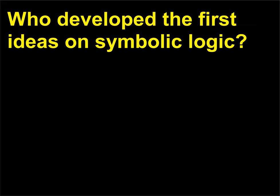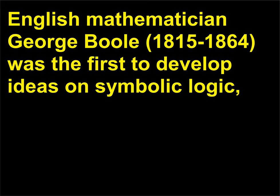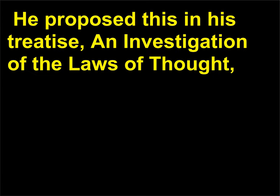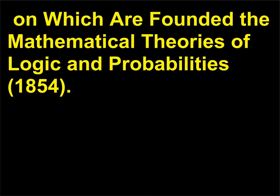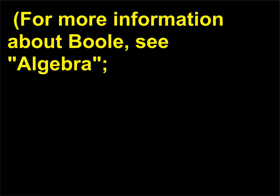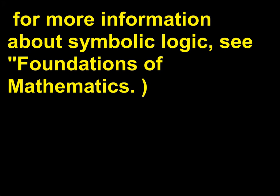Who developed the first ideas on symbolic logic? English mathematician George Boole (1815–1864) was the first to develop ideas on symbolic logic — that is, the use of symbols to represent logical principles. He proposed this in his treatise An Investigation of the Laws of Thought, on which are founded the Mathematical Theories of Logic and Probabilities (1854). Today, this is called Boolean Algebra.